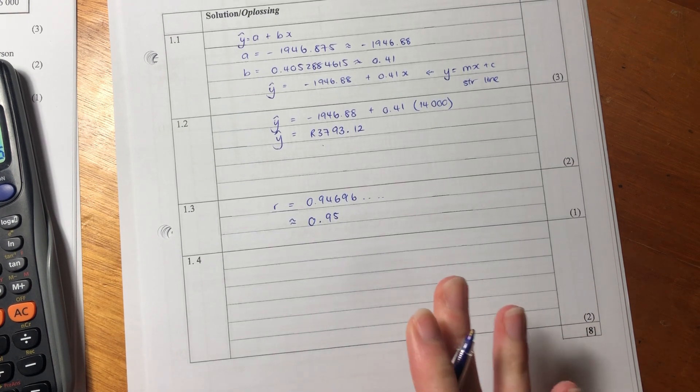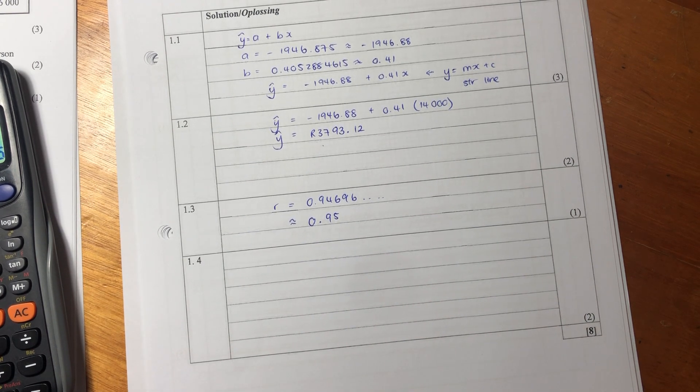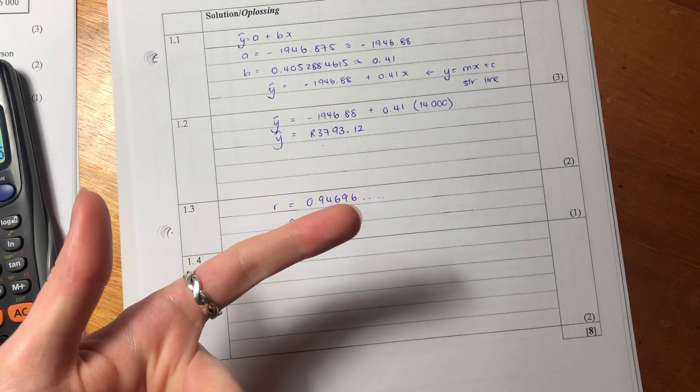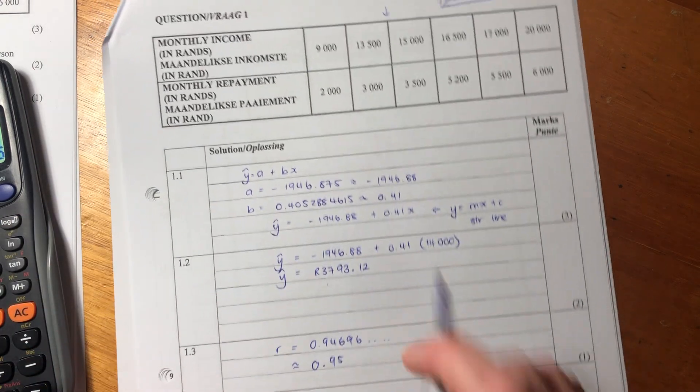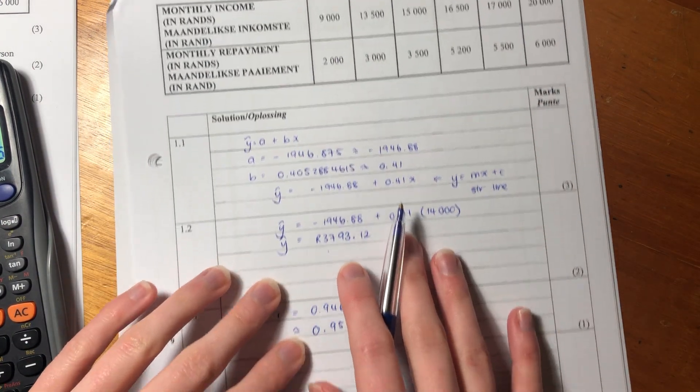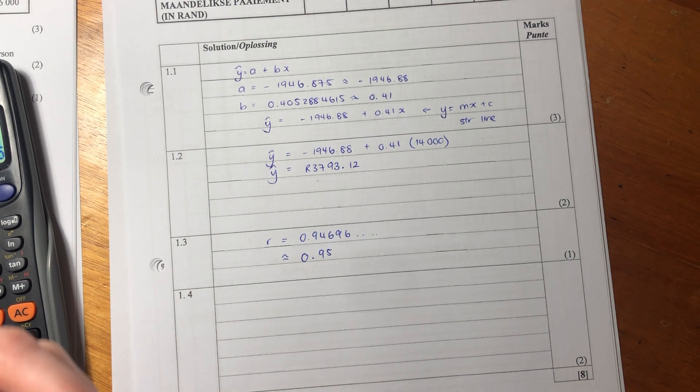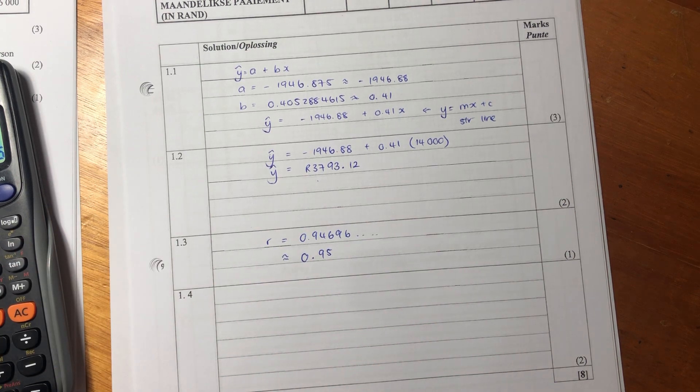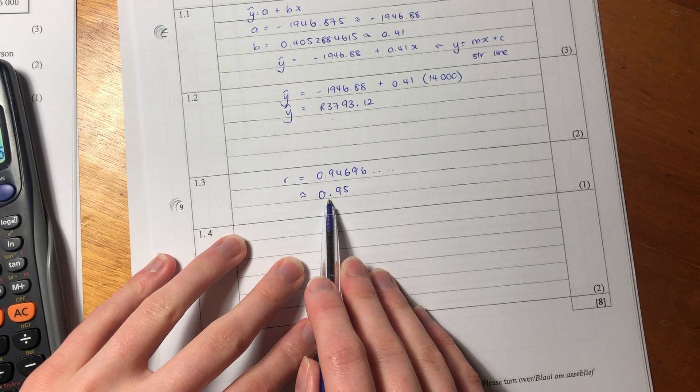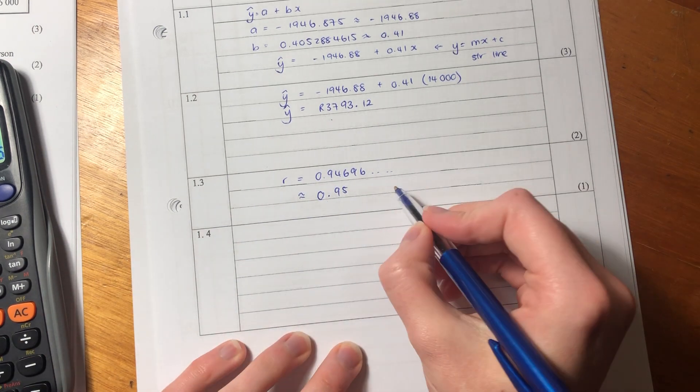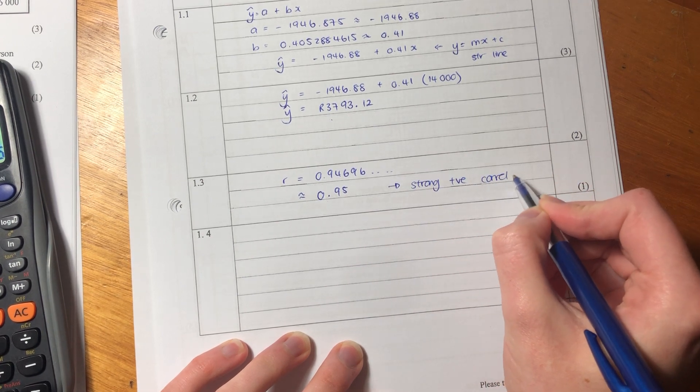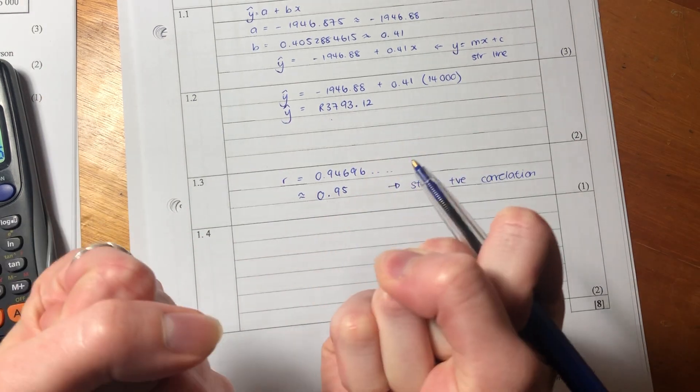Now, before we move on, they haven't asked us to interpret it, but I want us to interpret it because it's important. A correlation coefficient of 0.95 means that it is positively correlated and there is a strong correlation. So it's saying as the one goes up, the other one goes up. We can see that. That's what positive correlation means. And strongly means that when one goes up, the other one does go up, and it goes up quite markedly. So that is what that 0.95 means. It's important to understand what that means. So I'm just going to put, I'm going to say a strong positive correlation. It's describing how these two things interact with each other.